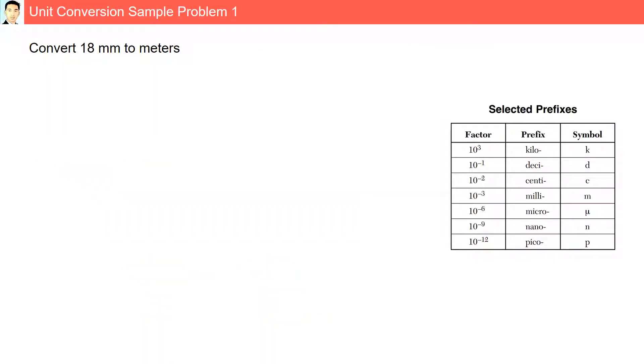Practice question 1: Convert 18 millimeters to meters. Here we are going from millimeters to meters. Our equality from the selected prefixes: 1 millimeter is equal 10 to the minus 3rd meter.